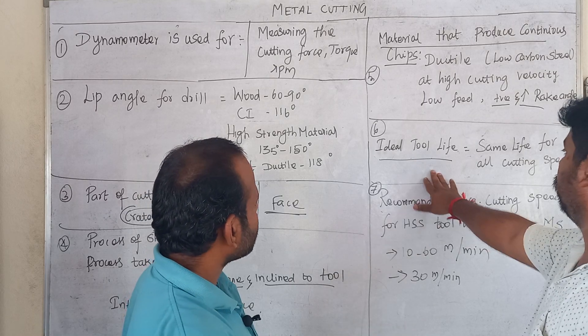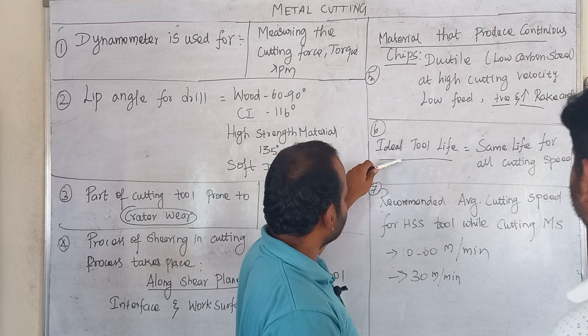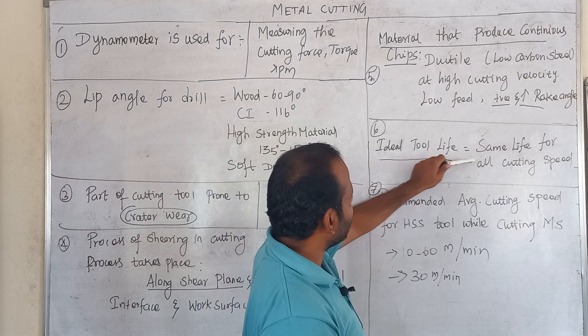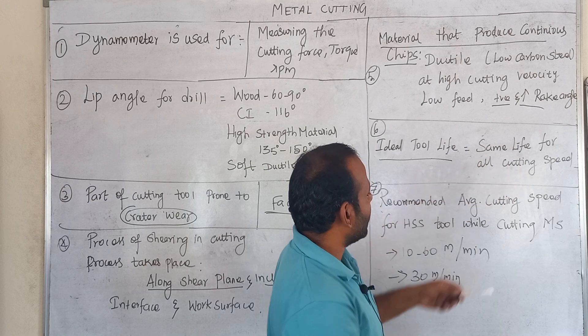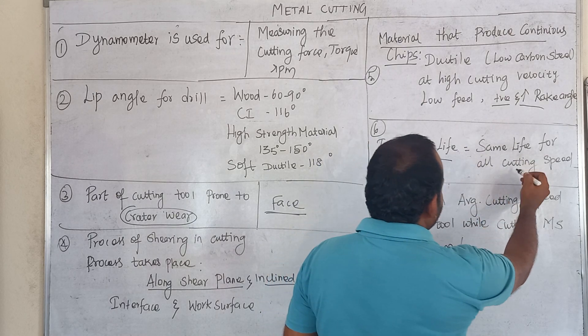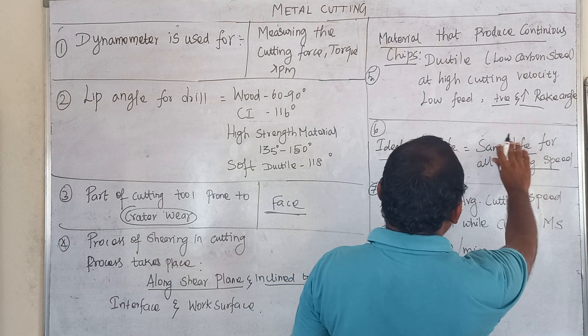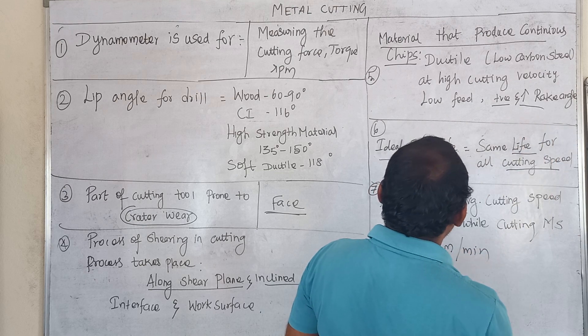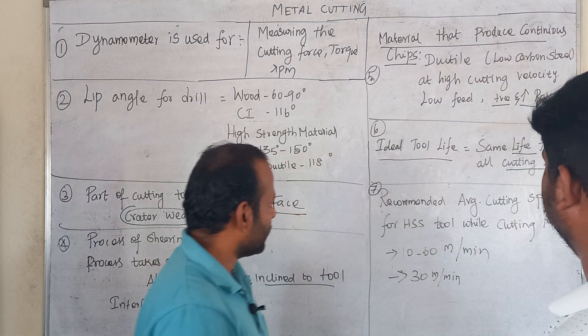The ideal tool life is equal for the same life at all cutting speeds. If you have cutting speed, cutting speed relates to tool life, and the tool life remains the ideal tool life across all cutting speeds.